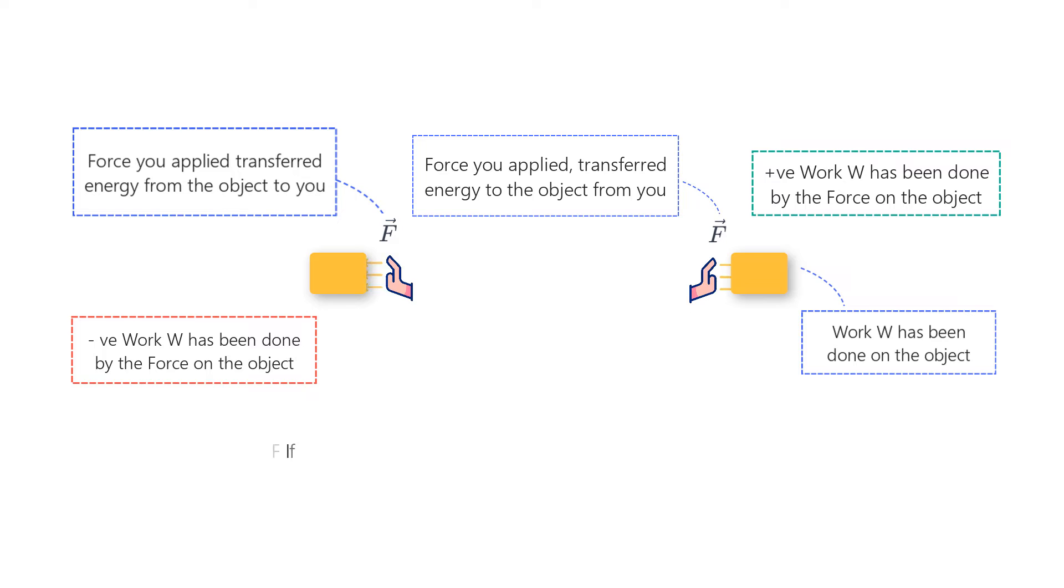Simply put, if the force helps increase the velocity of an object, we say it is doing positive work. But if it slows it down or reduces its velocity, we say it is doing negative work.